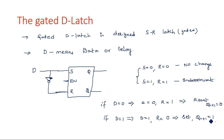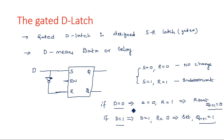Observing the input-output conditions: if D=0 then output=0, if D=1 then output=1. Whatever the input, the output is the same as the input. Only two possible cases exist since there is one input — 0 or 1. That is why it is called the data latch: whatever data is at the input will appear at the output.